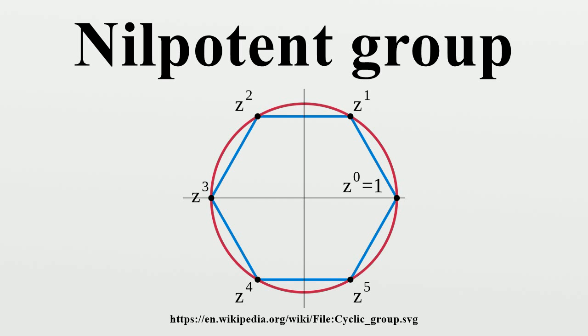Examples: As noted above, every abelian group is nilpotent. For a small non-abelian example, consider the quaternion group Q8, which is the smallest non-abelian p-group.